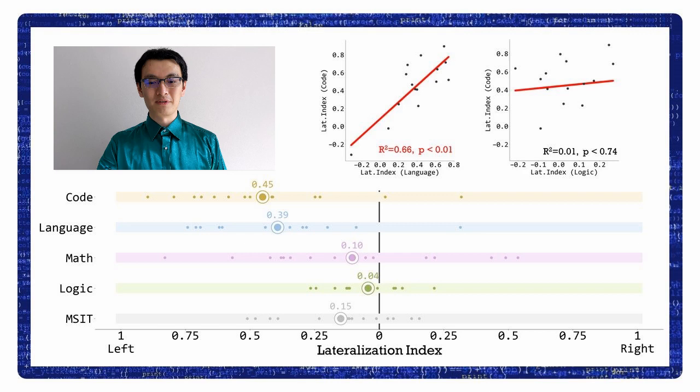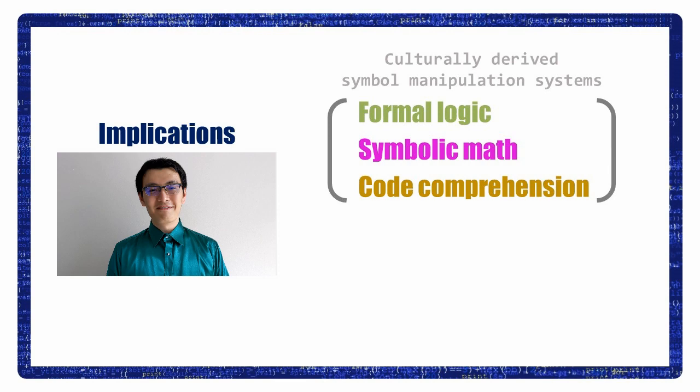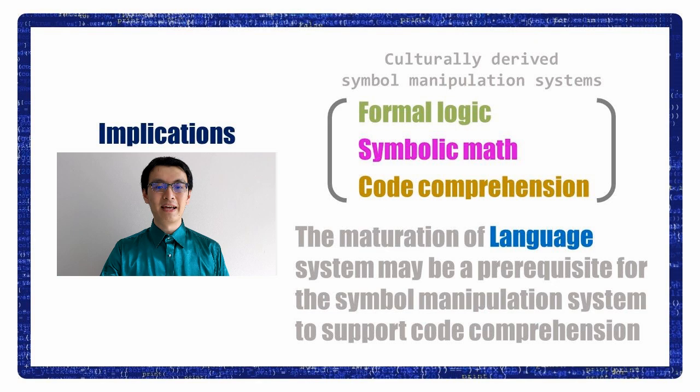What could this mean? Well, it's very likely that code comprehension shared neural resources with culturally derived symbol manipulation systems, mainly formal logic and perhaps symbolic math to a lesser extent. As for language, it's possible that language ability exerts some indirect influence on code comprehension. We suspect that a mature language system is the prerequisite to adapt the symbol manipulation system to support code comprehension. But this hypothesis, of course, requires future research to confirm.